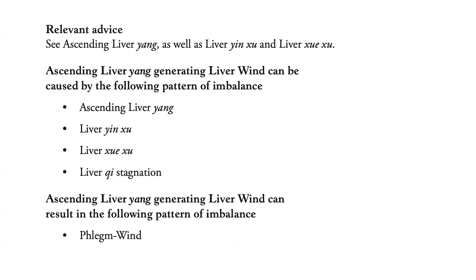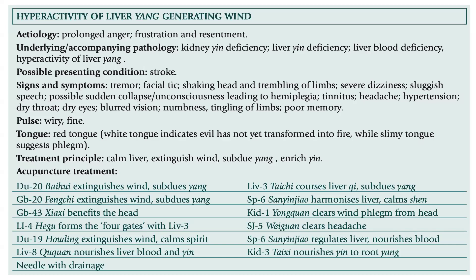Ascending liver yang generating liver wind can be caused by ascending liver yang, liver yin deficiency, liver blood deficiency, liver qi stagnation and can result in phlegm wind. To summarize, hyperactivity of liver yang generating wind — etiology: prolonged anger, frustration and resentment. Underlying accompanying pathology: kidney yin deficiency, liver yin deficiency, liver blood deficiency, hyperactivity of liver yang. Possible presenting condition is stroke.